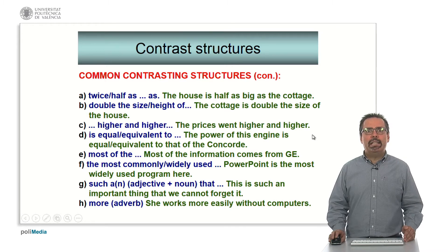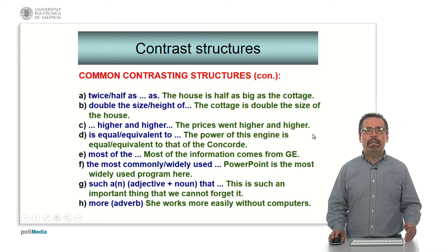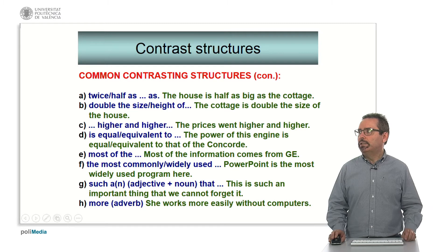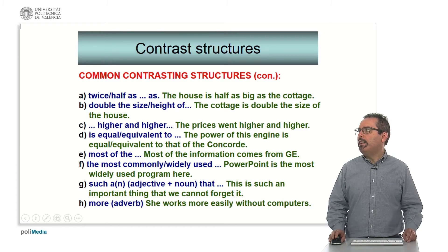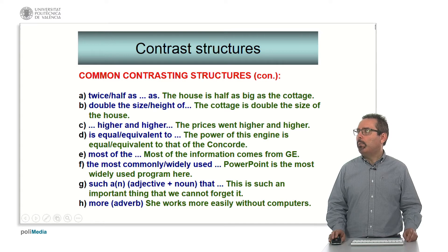In example C we have gradual comparisons when one property is increasing or decreasing gradually — it uses two identical comparative structures: 'The prices went higher and higher.' In example D we have 'equal or equivalent to': 'The power of the engine is equal or equivalent to that of the Concorde.' In example E, 'most of' means the majority of: 'Most of the information comes from GE.'